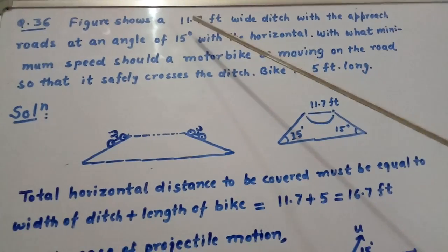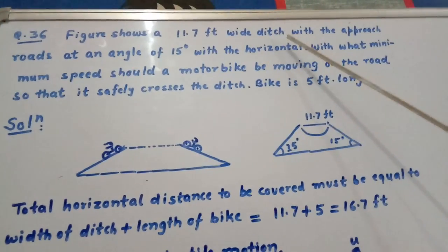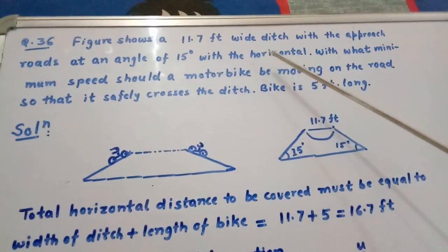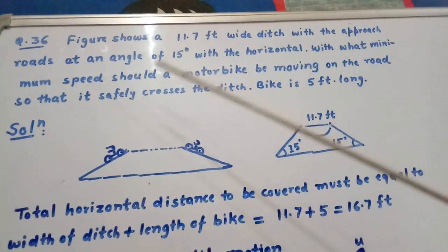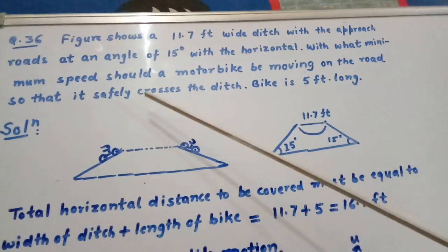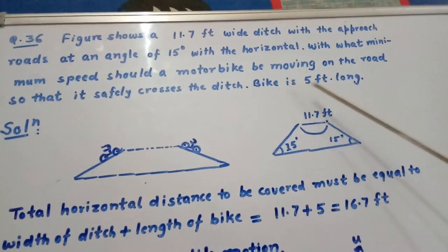The question is: Figure shows an 11.7 feet wide ditch with approach roads at an angle of 15 degrees with the horizontal. With what minimum speed should a motorbike be moving on the road so that it safely crosses the ditch? The bike is 5 feet long.